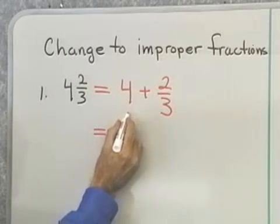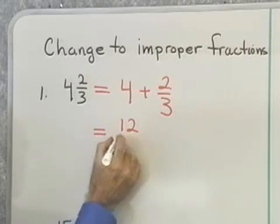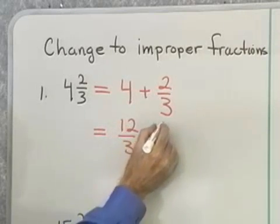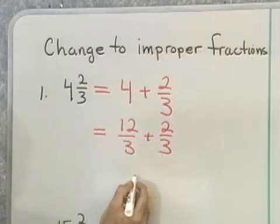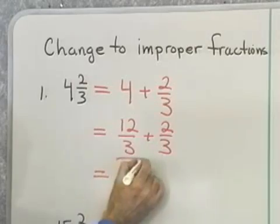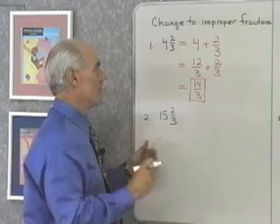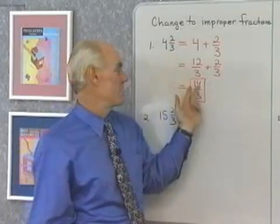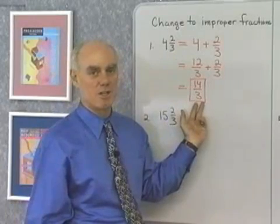Remember, this is 4 over 1, which is the same as 12/3, plus 2/3, and so that will be 14/3. So, the mixed number 4 and 2/3, as an improper fraction, is 14/3.